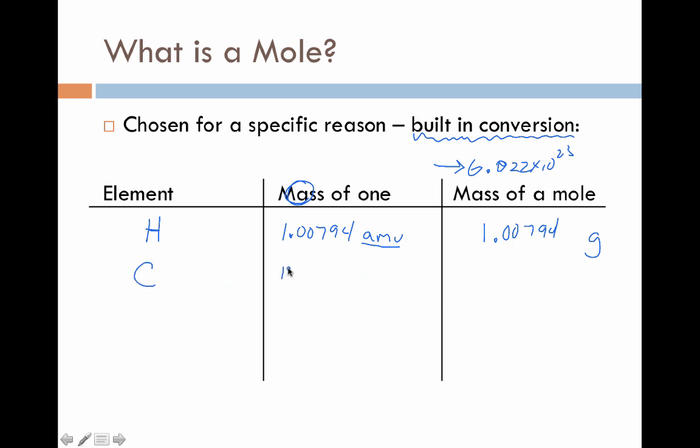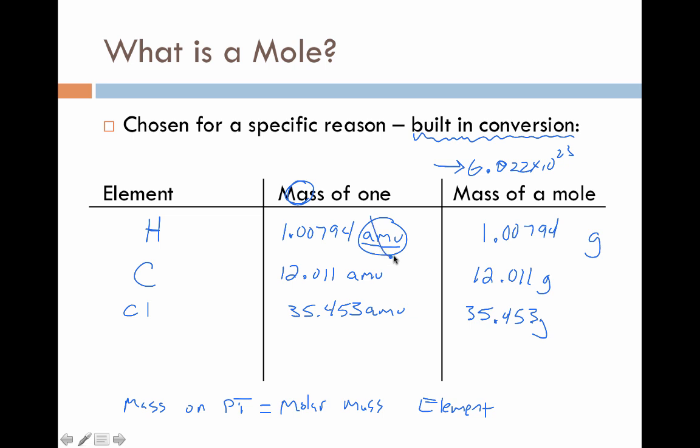Works for other elements as well. Carbon, 12.011 atomic mass units on the periodic table, which means that a mole of those carbon atoms weighs 12.011 grams. And then we'll take another one, chlorine, 35.453 atomic mass units on your periodic table means a mole of chlorine atoms is 35.453 grams. In short, the mass on your periodic table is basically equal to the molar mass of your element. We substitute the unit AMUs, which we can now get rid of, and we write instead the unit of grams, which is a much more practical unit for doing calculations and math in class.